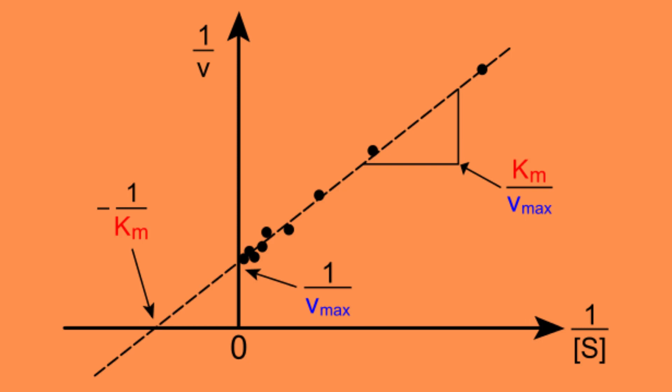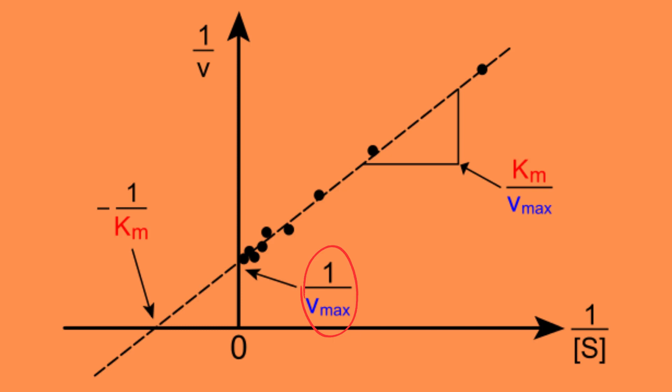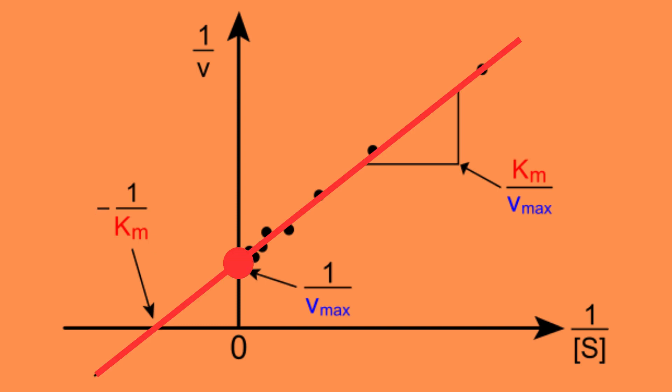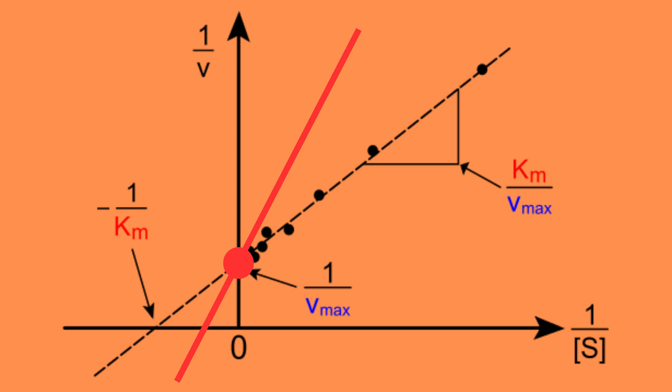Let us also take a quick look at the Lineweaver-Burk plot for competitive inhibition, where the y-axis is one over the rate of the reaction, the x-axis is one over the substrate concentration, the y-intercept displays one over the theoretical maximum of the reaction, and the x-intercept displays negative one over the Michaelis constant, or Km. Since we know that Vmax remains the same, we can fix that point of the new Lineweaver-Burk line. As the Michaelis constant increases but is inversed in the Lineweaver-Burk plot, we rotate the line counterclockwise to get the new plot in the case of competitive inhibition, since the x-intercept is negative one over the Km value.